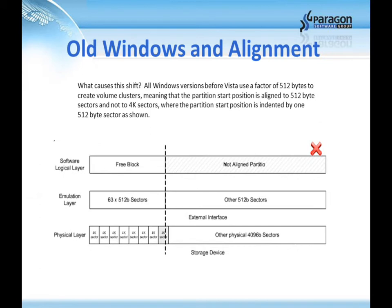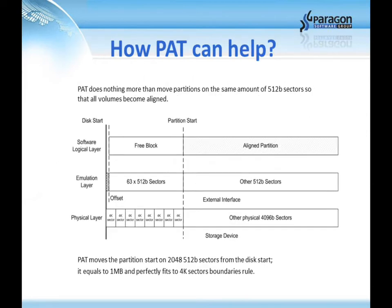So what causes this shift? All Windows operating systems released before Vista use a factor of 512 bytes to create volume clusters, meaning that the partition start point position is aligned to 512-byte sectors and not 4K sectors, where the partition start position is indented by one 512-byte sector as shown. PAT can help by simply moving partitions by the same amount of 512 bytes so all volumes can be aligned. PAT shifts the partition start to 2048 512-byte sectors from the disk starting point, which equals 1 megabyte and perfectly fits the 4K sector boundaries rule.